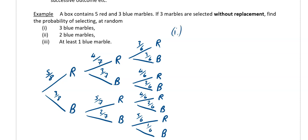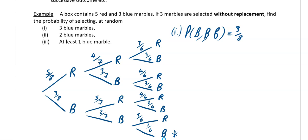We've got our tree diagram filled in. Part one asks for the probability of getting blue, blue, blue — that corresponds to the bottom branch. You just multiply along the branches: 3/8 × 2/7 × 1/6, and if you do that on your calculator you'll get 1/56.